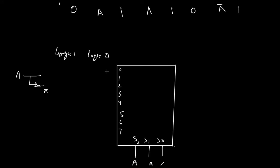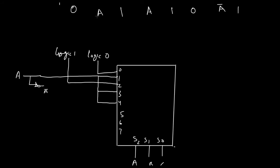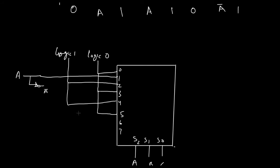Accordingly: i0 is connected to logic 0; i1 is connected to A; i2 is connected to logic 1; i3 is connected to A; i4 is connected to logic 1; i5 is connected to logic 0; i6 is connected to A-bar; and i7 is connected to logic 1. In this way we can implement the four-variable function using an 8-to-1 multiplexer.